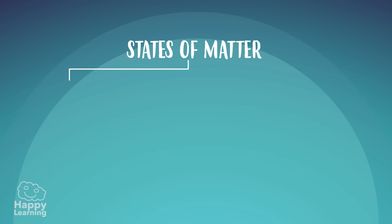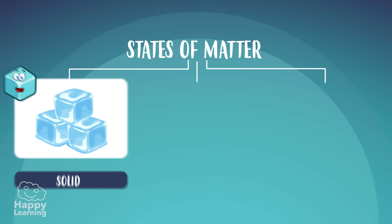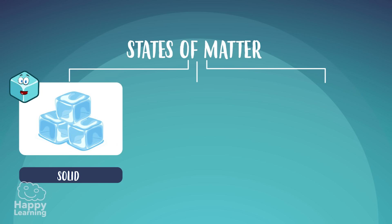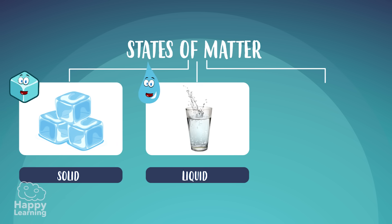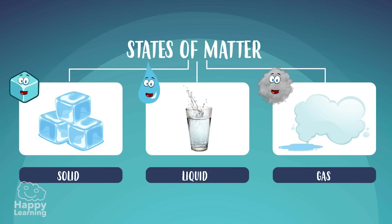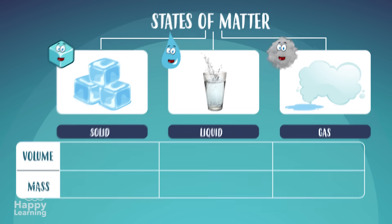Matter can be in three states – solid form, liquid form, and gas form. Each one of these has its own characteristics. Let's get to know them!